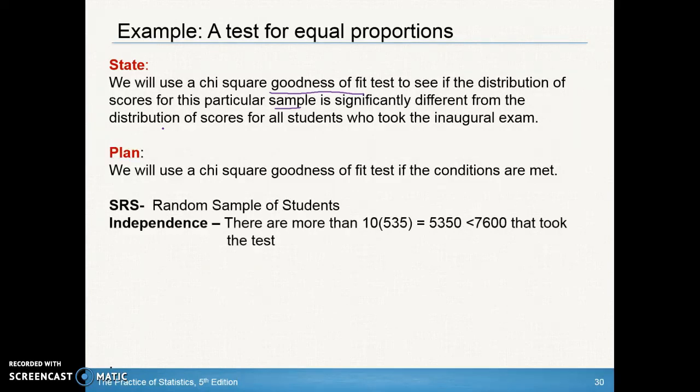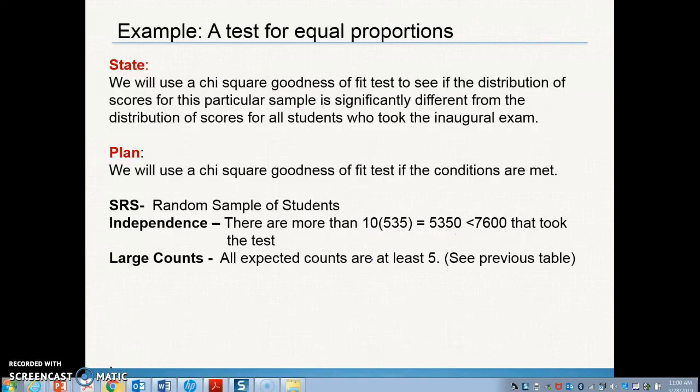These are all the same that we've done before. Simple random sample of students. Independence, there's more than—now notice here, we did actually have a number to compare it to. 10 times 535 is 5,350, which is less than 7,600 that took the test. And then remember, we don't have a normal condition. We just have a large counts condition. And from our previous page, all expected counts were at least 5. We can proceed from there.